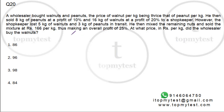Hi, this is a question from CAT 2018, slot 1. This is a question on arithmetic profit and loss. It's a pretty long question, so that's what makes it probably a little more difficult than usual to solve. But if you solve it slowly, you can answer the question in a straightforward manner. The calculation is there a little bit.